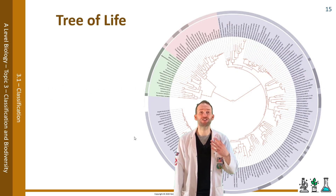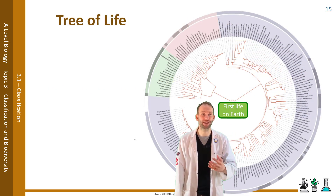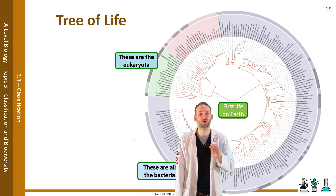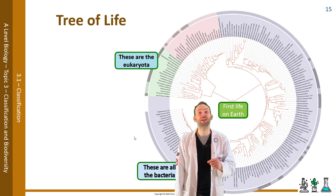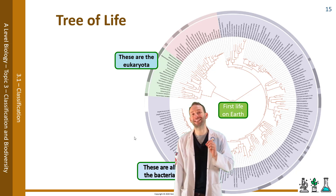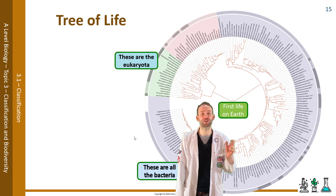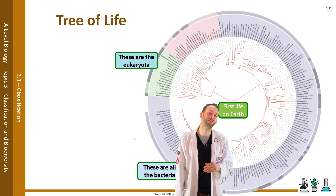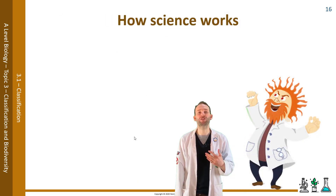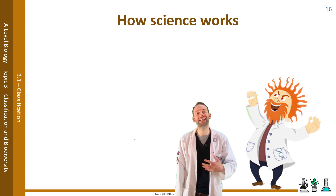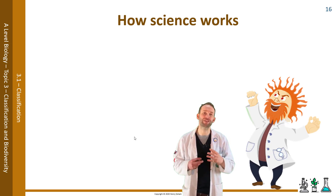Here is a phylogenetic tree of life, which has been put together using DNA analysis to see how closely related species are based on how much of their code they have in common. You will have more DNA in common with species that are more closely related to you on the tree of life. Scientists can look at the percentage of DNA in common between species to determine how far apart they should be on the tree of life.